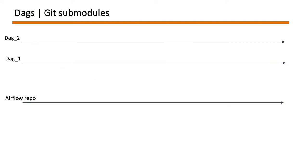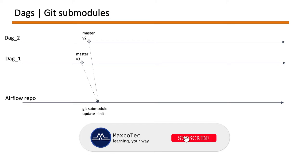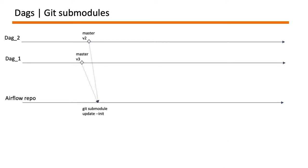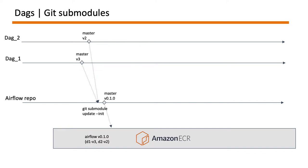Here we see a timeline of the Airflow repository with two example DAG repositories. The developer decides to bring version 2 of DAG 2 and version 3 of DAG 1 into the Airflow repository. They run `git submodule update --init`, which fetches the latest master branch of both DAG submodules. The developer commits into the Airflow repository, generates a new version 0.1.0, and deploys it to ECR. Later, if there are issues with DAG 1, the developer reverts by running `git checkout v2` from the DAG 1 submodule directory, so the Airflow repository now tracks version 2 of DAG 1.